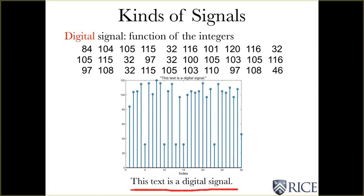Well, it turns out, if you take position of the character along the line, the value of the signal is a member of the alphabet. So s of 1 is capital T. Well, that's a digital signal. It's a function of the integers.